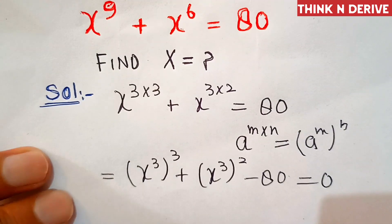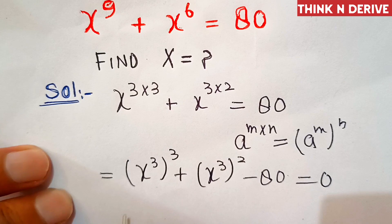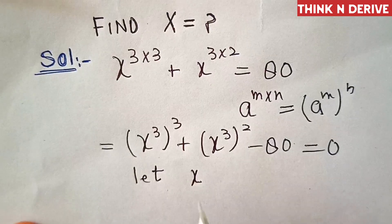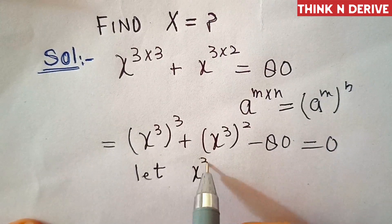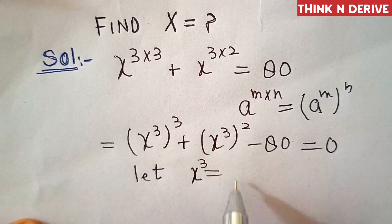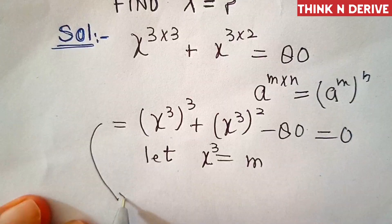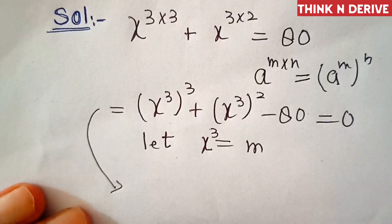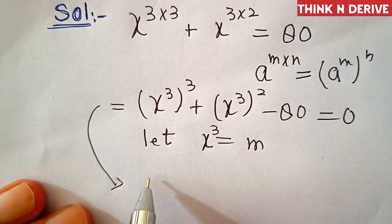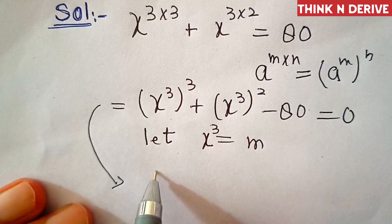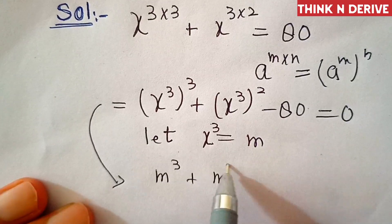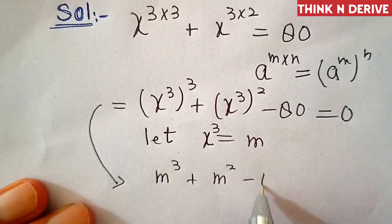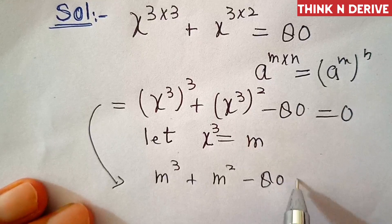Now we'll put x power 3 equal to m, that is x cube equal to m. So this can be written as m cube plus m square minus 80 equal to 0.